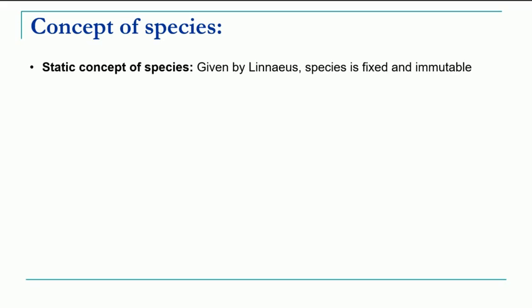Looking at the concept of species in detail: the first is the static concept of species, given by Linnaeus. According to him, species is fixed and immutable, because at that time there was no discovery of genetics or laws of genetics. So he defined them as fixed and immutable with no mutation.